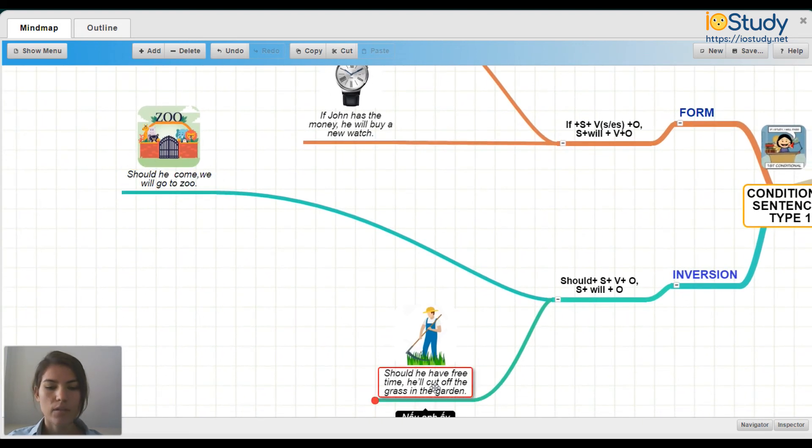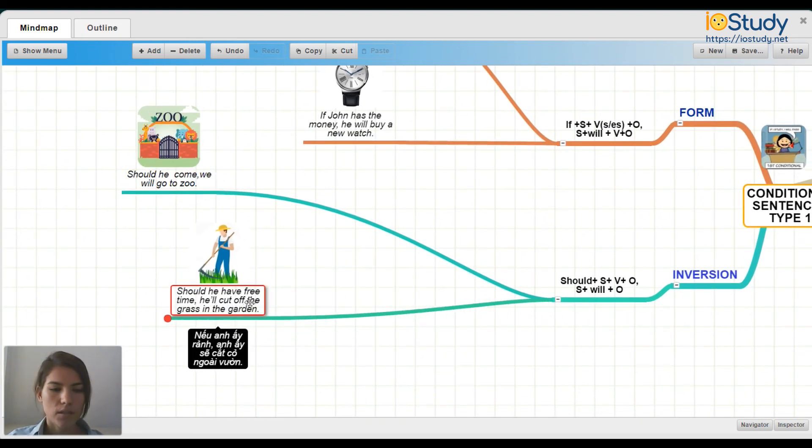And next example. Should he have free time, he'll cut off the grass in the garden. Okay. So we are using the conditional in an inversion way.